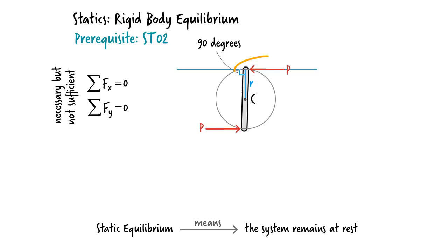Thus, we could say that this force has a tendency to cause rotation around point C. We refer to this tendency as a moment. Putting it differently, we say force P produces a moment about point C. We define the magnitude of this moment as the product of P and R, that is, M equals P times R.